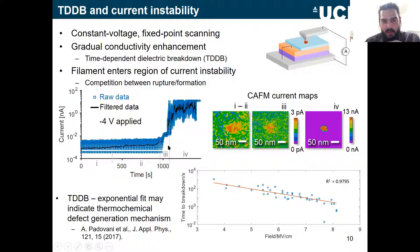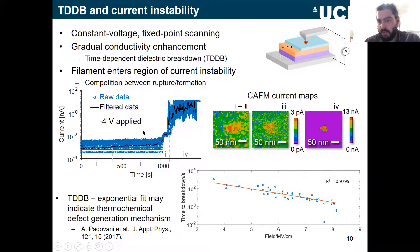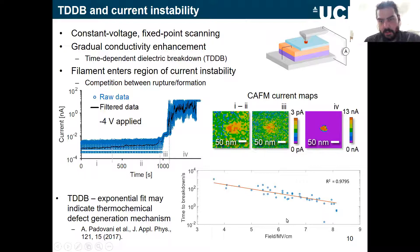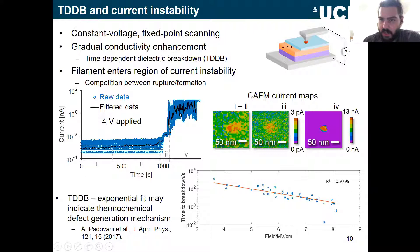Looking at the current maps, up to the early region we have a conductive spot reaching only a few picoamps when scanning at about seven volts. In the spiky region we have a very conductive spot reaching the detector saturation around 13 nanoamps. This behavior corresponds to time-dependent dielectric breakdown: the time to breakdown — defined as when one nanoamp is reached — is exponentially dependent on the field, which could be indicative of a thermochemical defect generation mechanism.